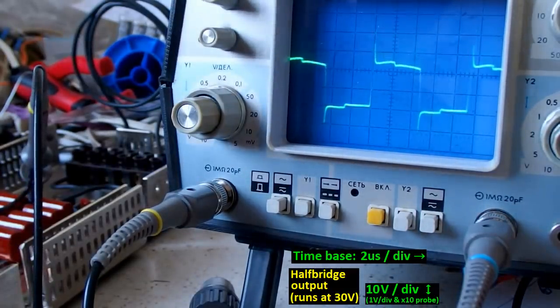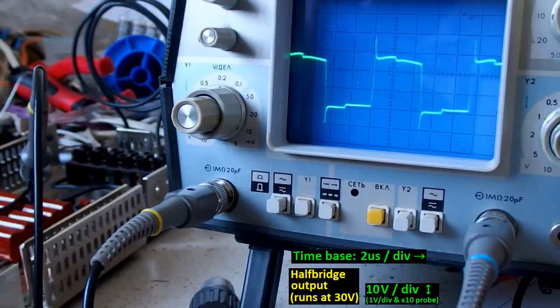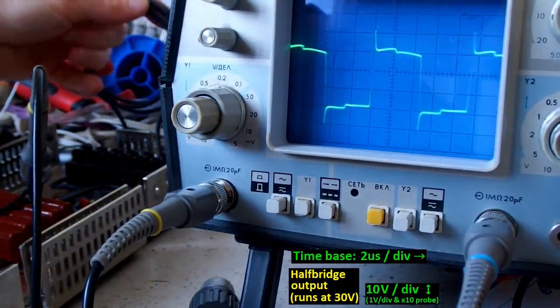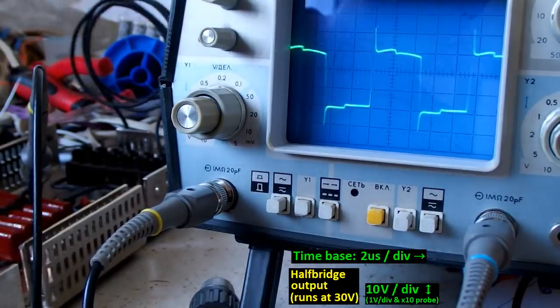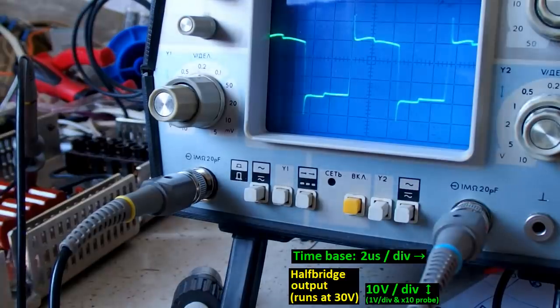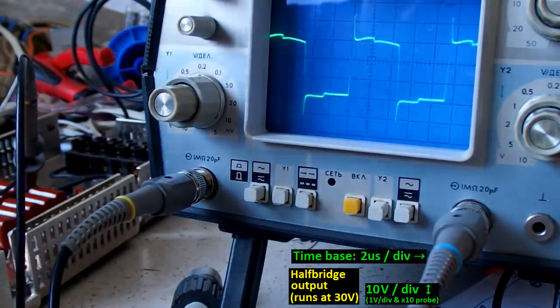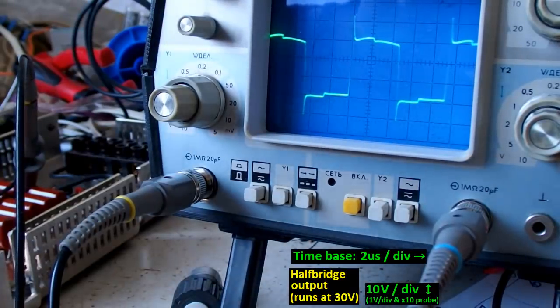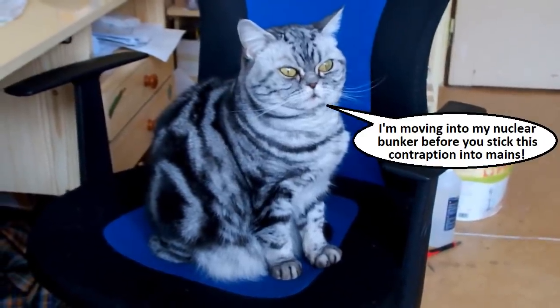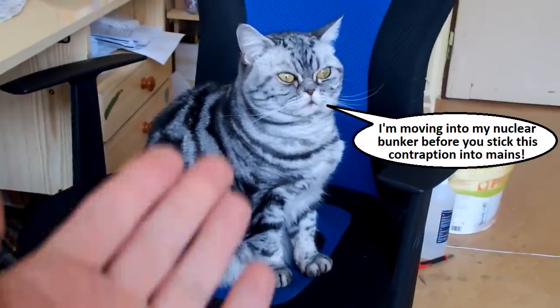And the overshoots seem to be proportional to the input voltage. But they reduce with higher inductance of the primary. So it seems like the overshoots shouldn't be too high for the transistors at mains voltage. But now it's all about the bravery of sticking this into mains. Now the question is, who's going to stick this into mains? My cat probably.